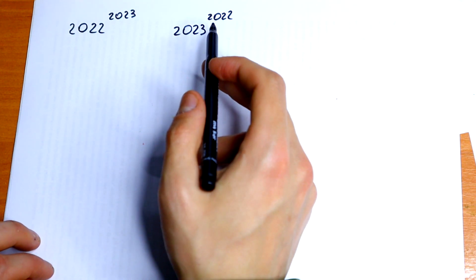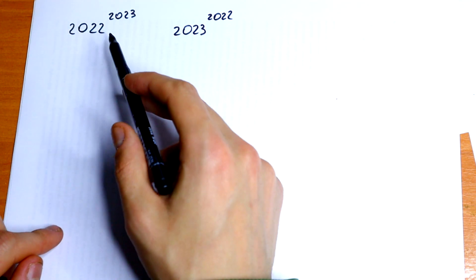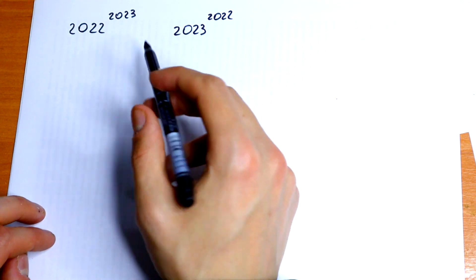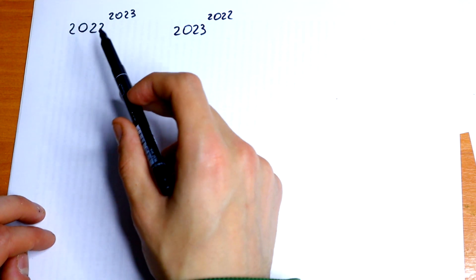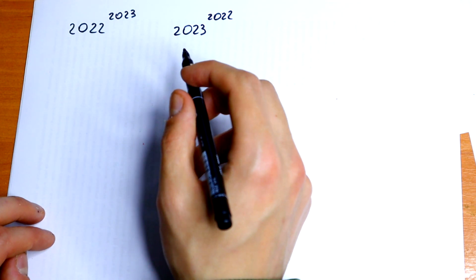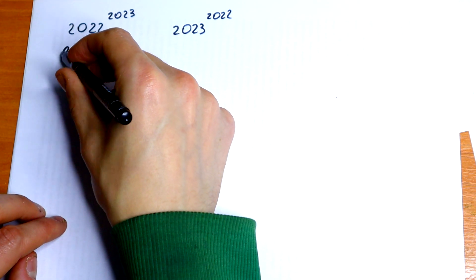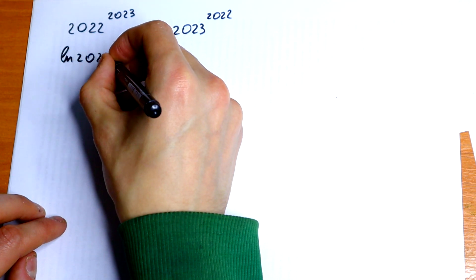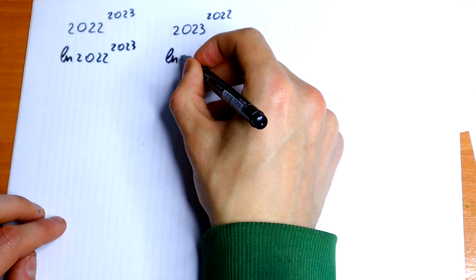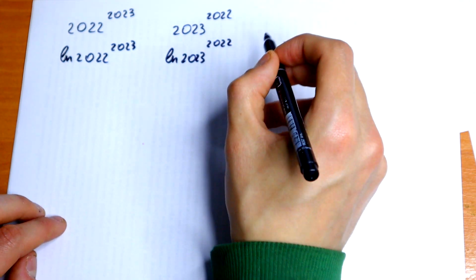First of all, it will be good to simplify this a little bit, because it's hard to just feel the answer. Let's try to simplify. Since we have an exponential expression, we use a log on both sides. I want to use a natural log — natural log of 2022 to the 2023 power on the left, and natural log of 2023 to the 2022 power on the right.